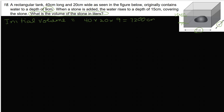The unit is centimeter × centimeter × centimeter = centimeters cubed. Then the after volume is 40 by 20 by 15. So 40 times 20 times 15 gives us 12,000 centimeters cubed.